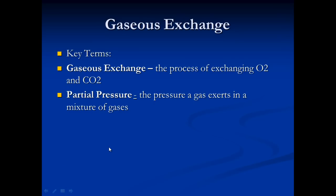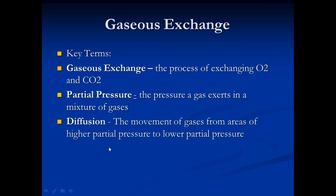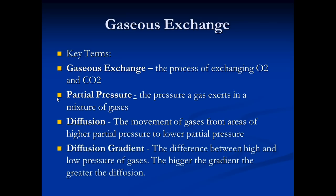The next term is diffusion. This is the movement of gases from an area of high partial pressure to an area of low partial pressure until you reach an equilibrium. The diffusion gradient is the difference in pressure between the area of high partial pressure and low partial pressure. The bigger the gradient, the greater the rate of diffusion — all rate means is how quickly something happens.